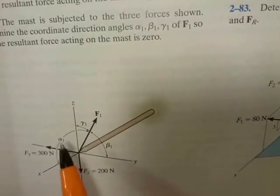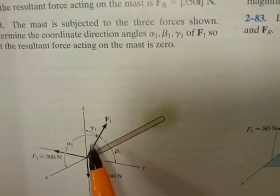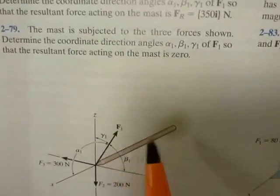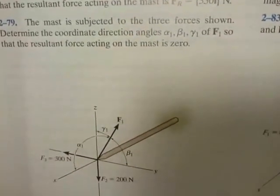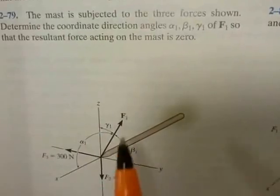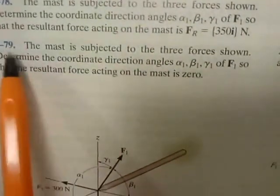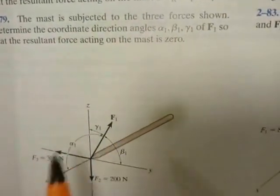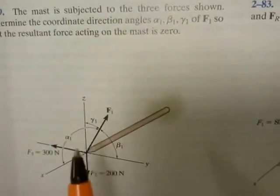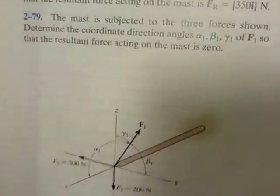So what are the coordinate direction angles of F1 — what's alpha1, beta1, and gamma1? One way to approach this is to go back and look at example 2.9, practice that, and then try this. You can also look at problem 2-79 afterwards. These problems are not that difficult.